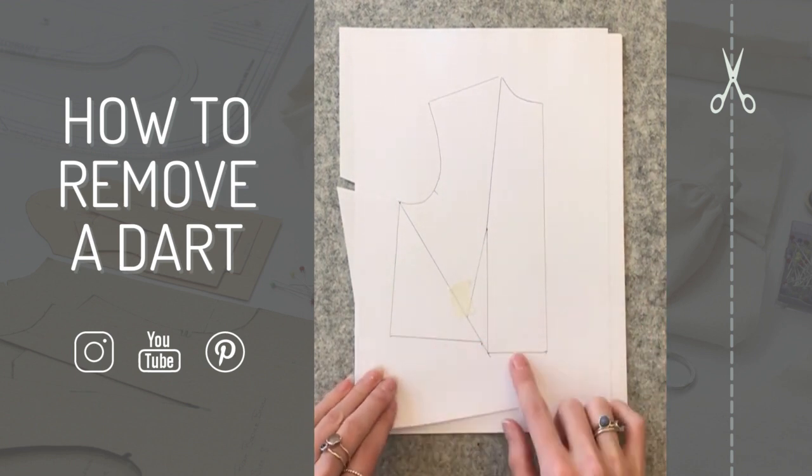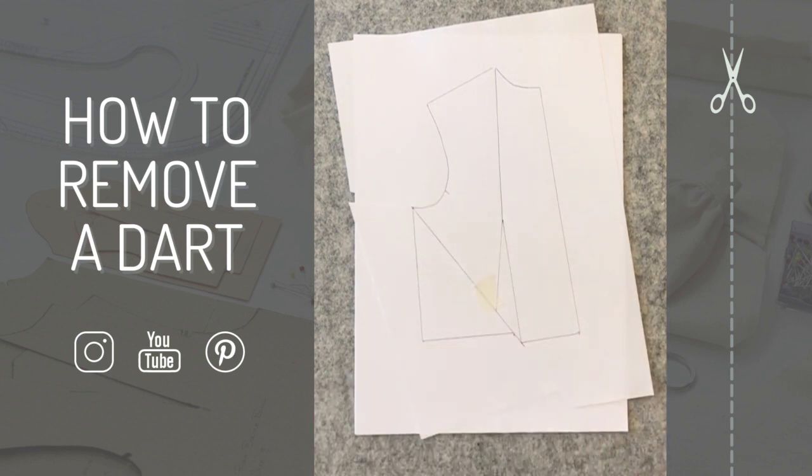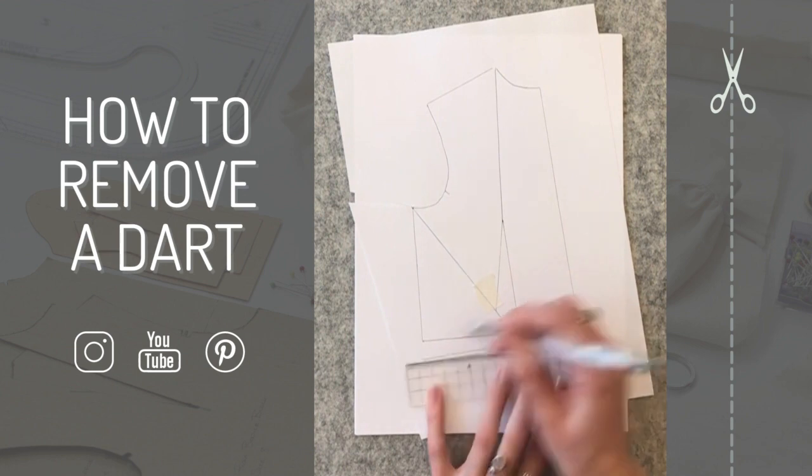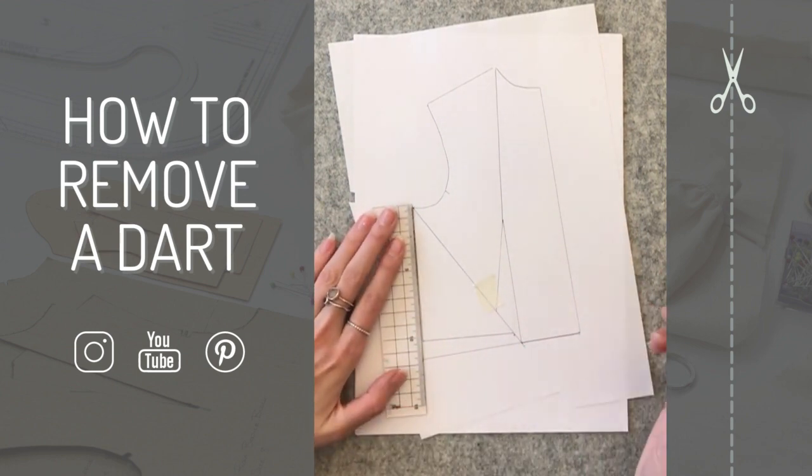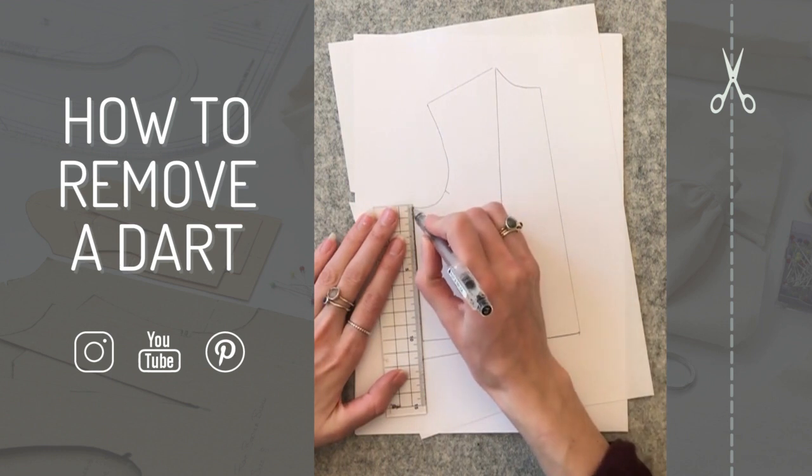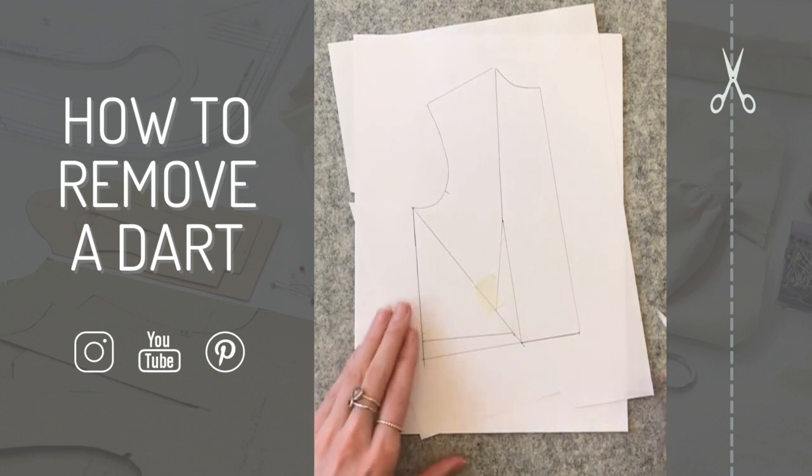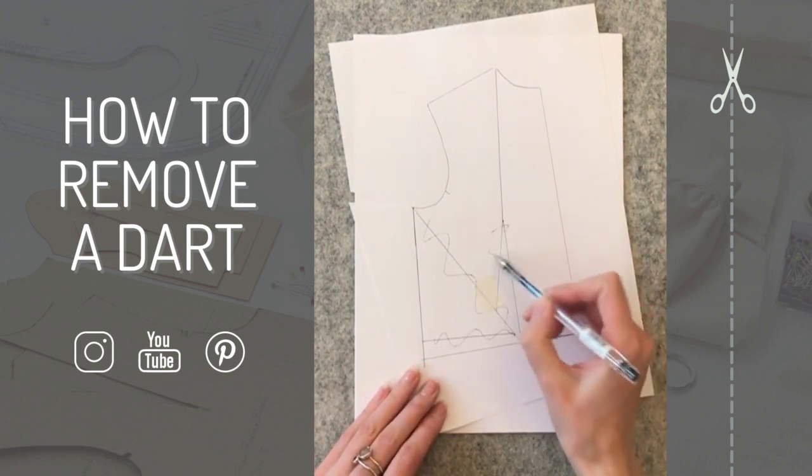All we want to do is extend this line across and extend this line down. We will have added extra into the pattern to allow for this dart, but remember you only want to do this if you're doing something a little bit more oversized so you already have that room for maneuver in your garment. Now you can ignore all of these lines here.